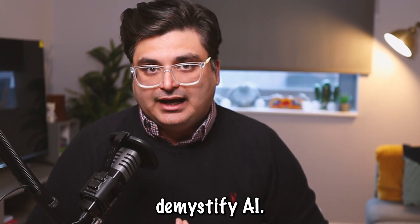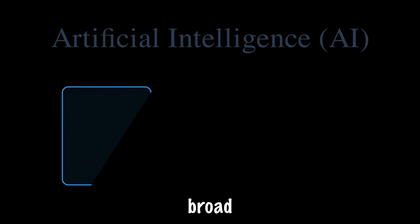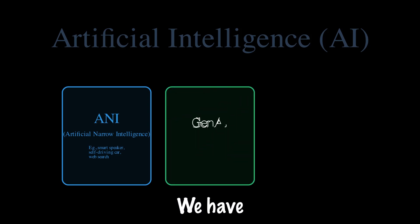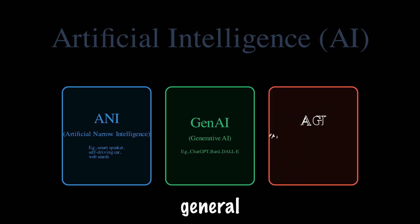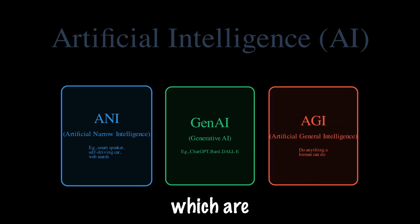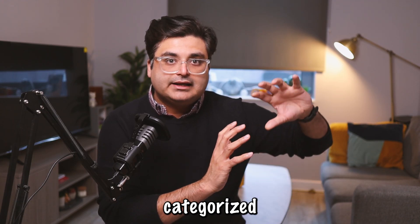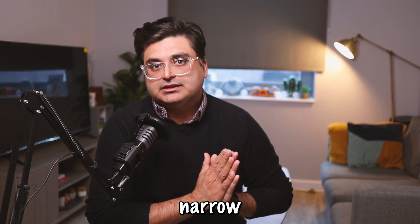Let's demystify AI. I want to categorize AI into three broad categories: ANI — artificial narrow intelligence, generative AI, and AGI — artificial general intelligence. All machine learning-based models which are trying to learn from data and predict are categorized under ANI, artificial narrow intelligence.